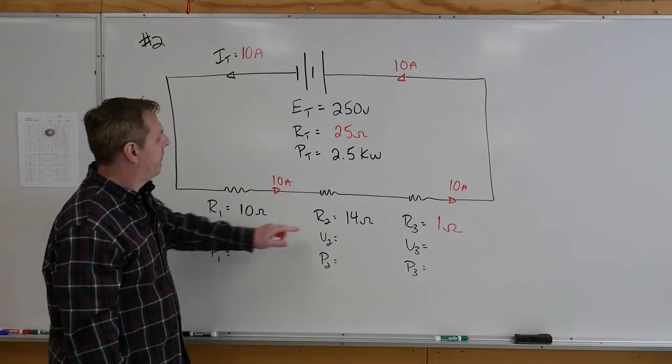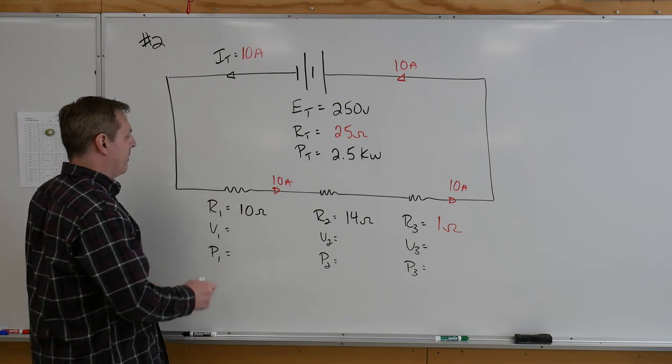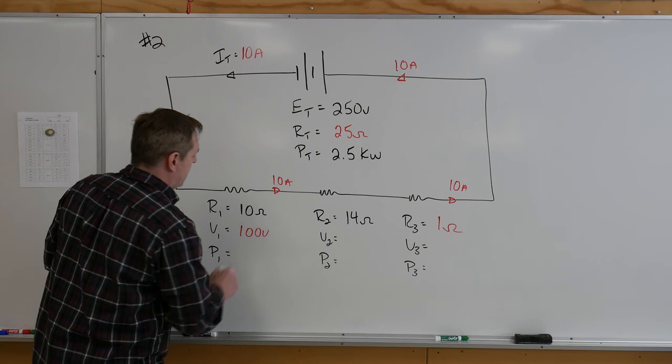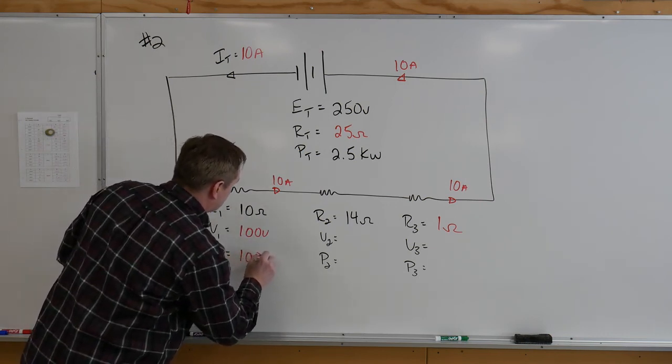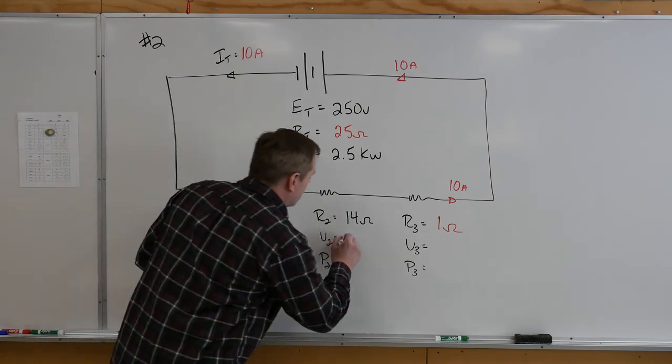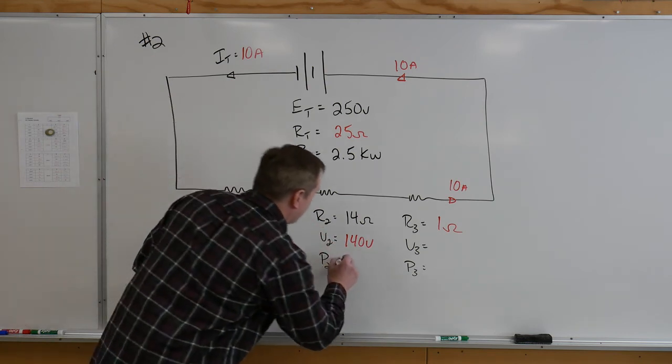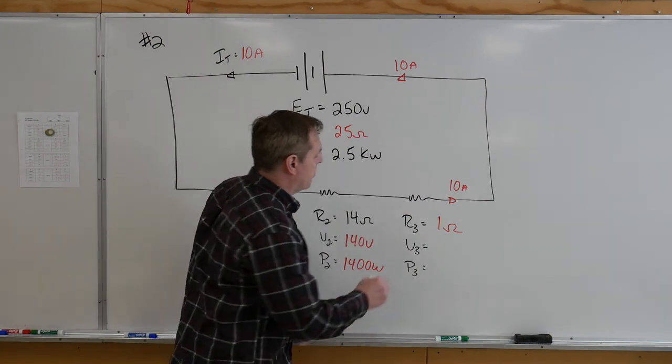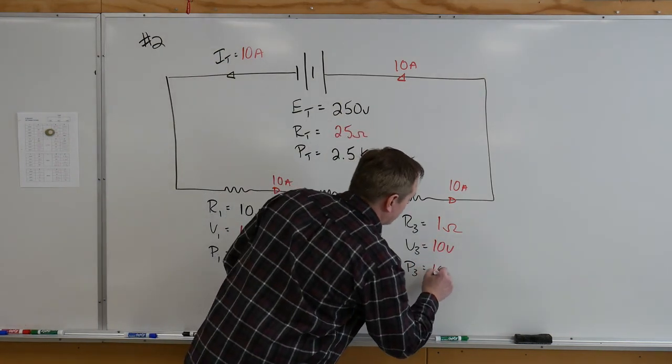So once we have the resistances and we know that current, it's pretty straightforward. We can very quickly do some math. 10 times 10 gives us 100 volts, 100 times 10 gives us a thousand watts. 14 times 10 gives us 140 volts, 140 times 10 gives us 1400 watts, and then 10 times 1 is 10 volts, and 10 times 10 is 100 watts.